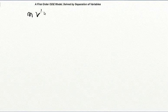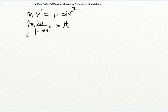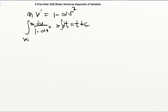Now let's apply the method of separation of variables to the first-order equation from our model: m v' = 1 − α v². It's completely evident that this is a separable equation — there's no t whatsoever. So we separate the variables and write m dv / (1 − α v²) = dt. The right-hand side integrates trivially to give t + C, and the left-hand side is a partial fractions problem. We have to break up m / (1 − α v²) into a sum of terms where the denominator is factored.